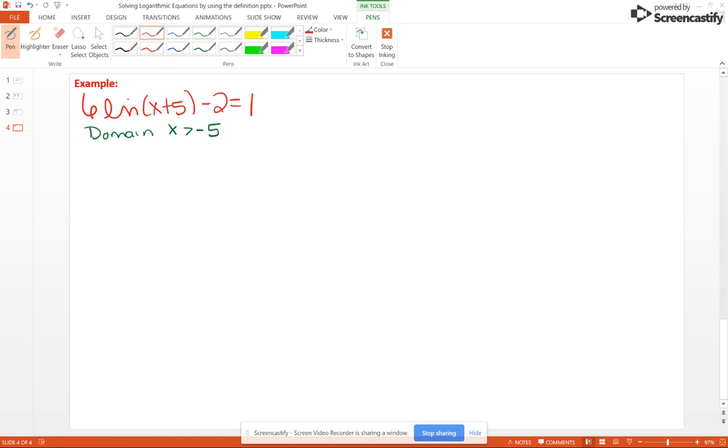With our equation, our first step is going to be add 2 to both sides. So 6 natural log of x plus 5 equals 3. Divide through by 6 and get natural log of x plus 5 equals 1 half.